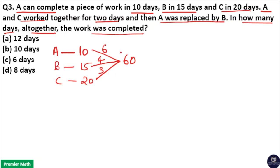Now the concept of this diagram means 60 unit is the total work. A's efficiency is 6 unit means A can complete 6 unit of work in a day. B's efficiency is 4 unit means B can complete 4 unit of work in a day. C's efficiency is 3 unit means C can complete 3 unit of work in a day.